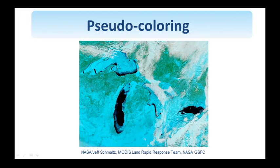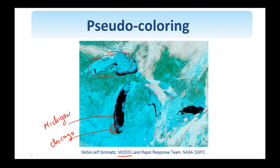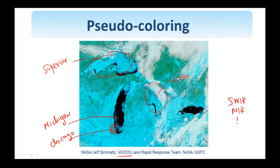Shown here is a beautiful pseudo-color image of the Great Lakes area taken by MODIS — the Moderate Resolution Imaging Spectroradiometer — aboard the NASA Aqua satellite. Lake Michigan, with Chicago nearby, and Lake Superior are visible, along with Lakes Huron and others. For this false color image, a combination of short-wave infrared, near infrared, and the red channel were used. This pseudo-coloring allows us to distinguish ice from snow and water from clouds. We can see that Lake Superior is completely frozen — this image was taken in the winter of 2014.